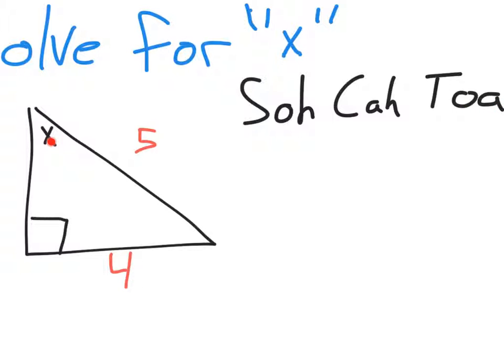So we're looking for x. We have the opposite of x, and we have the hypotenuse. If you really wanted, you could use Pythagorean theorem to find the third side, but with what we have right now, we have opposite and we have hypotenuse.